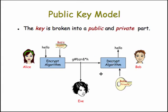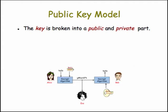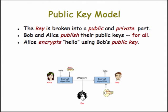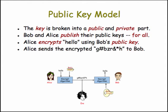The encryption happens by using a key that's been divided into two, and as you can see visually, these two parts are related — they really are one key that's been divided in half. Bob and Alice publish their public keys, and that's the big difference between RSA and Diffie-Hellman. They publish them so that all people who want to encrypt messages to Bob can use Bob's public key. Alice encrypts the word "hello" using Bob's public key, sends the encrypted gibberish to Bob, who decrypts it with his private key.